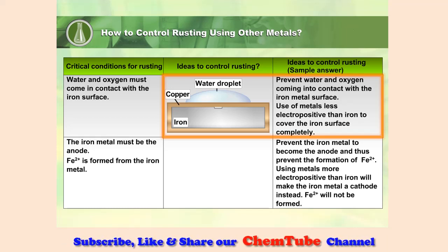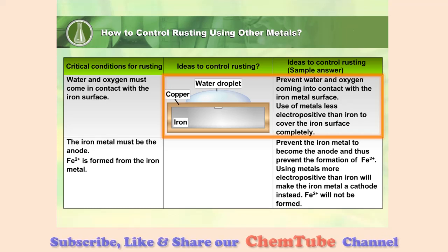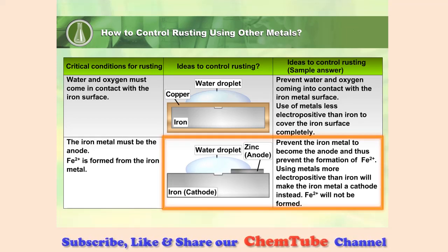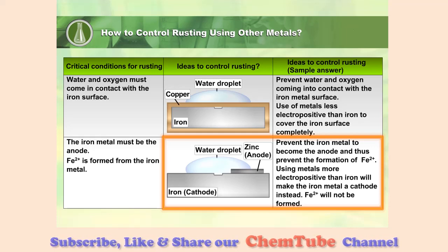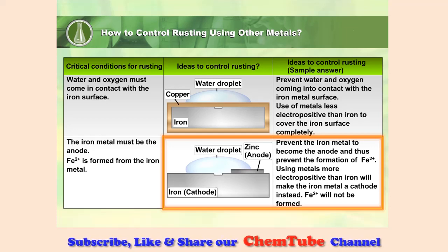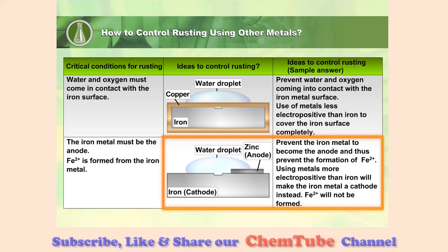Use of metals less electropositive than iron to cover the iron surface completely prevents the iron metal from becoming the anode, and thus prevents the formation of iron 2 ions. Using metals more electropositive than iron will make the iron metal a cathode instead, so iron 2 ions will not be formed.